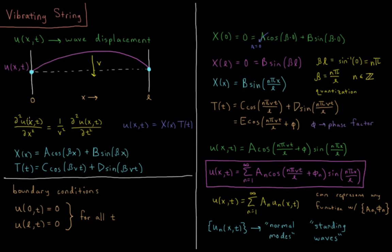The second derivative of the displacement with respect to position is equal to one over velocity squared times the second derivative of the displacement with respect to time. We solve this by assuming that the displacement function can be separated into a function of space and a function of time, and this led to the equations that the space part and the time part are both functions of sines and cosines of a constant beta times their respective variables.